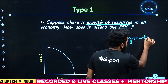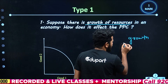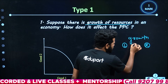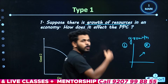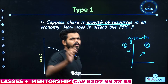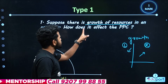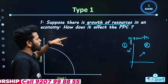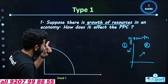If we have a curve, we have a left position and a right position. If we have a right position, the growth is positive. If we have a left position, we have a decline. If there is a growth of resources, we have a PPC curve.